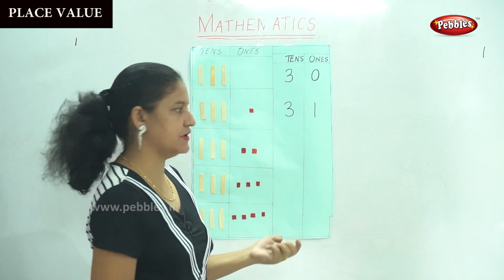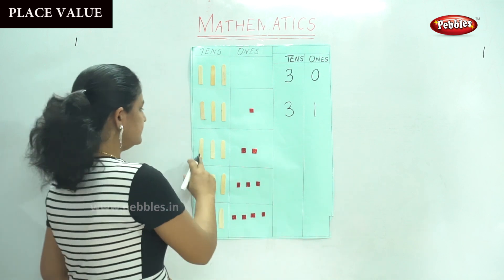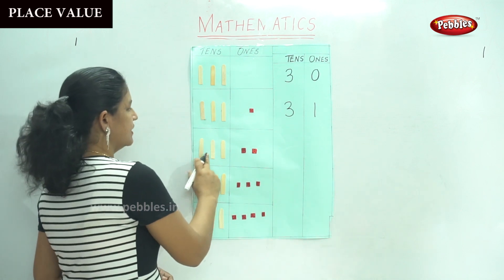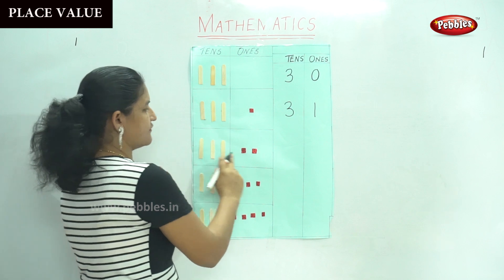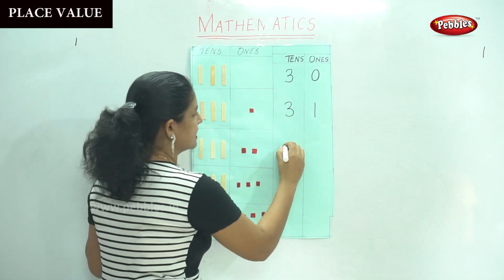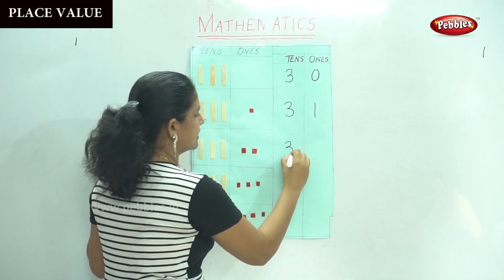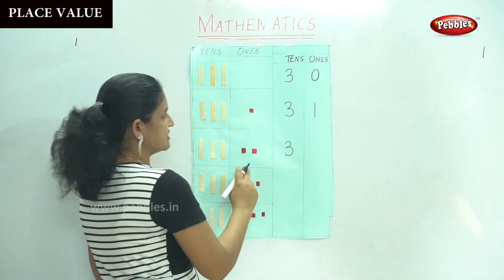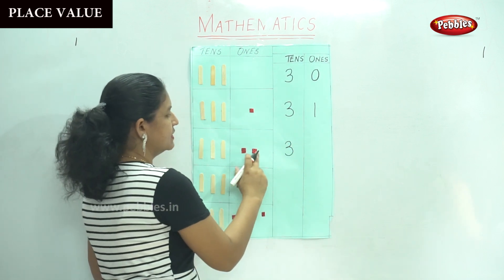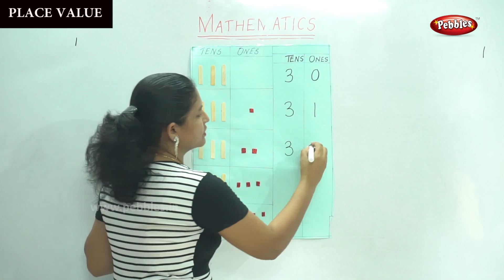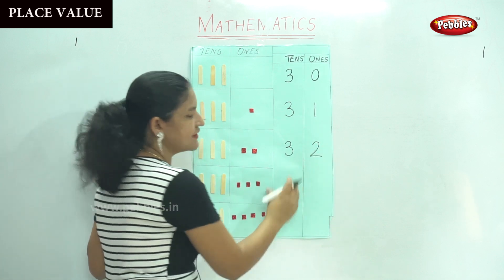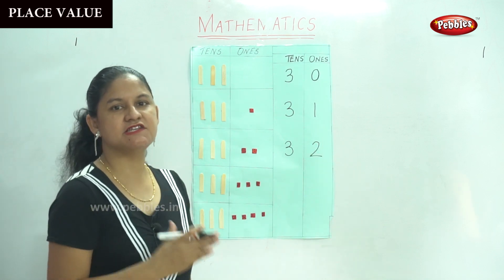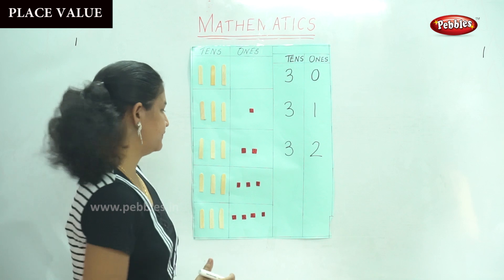The next number: ten, twenty, thirty. So we have three tens, and in the ones place we have one, two — two ones, which gives us the number thirty-two.